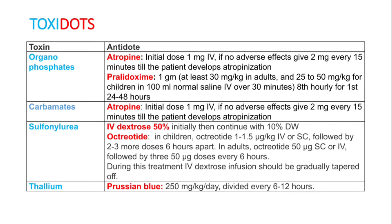Carbamates are something similar to organophosphates — there you have to give atropine. Sulfonylurea rarely produces overdose or toxicity. For any sulfonylurea-induced hypoglycemia, give IV dextrose 50%, then continue infusion with 10% dextrose water. Octreotide is an antidote for sulfonylurea-induced hypoglycemia — 1.5 microgram per kg body weight IV, with repeated doses as recommended.